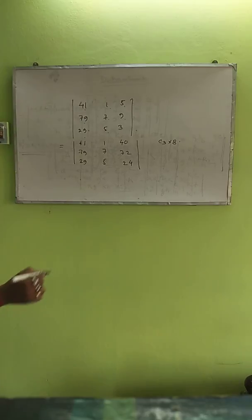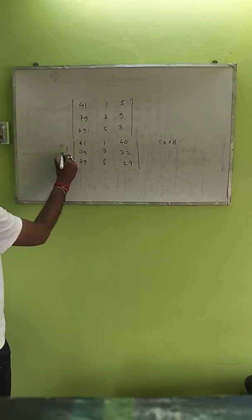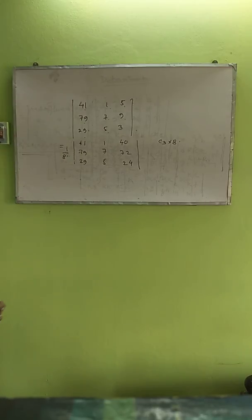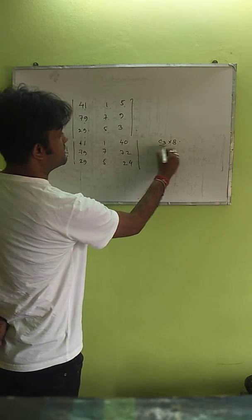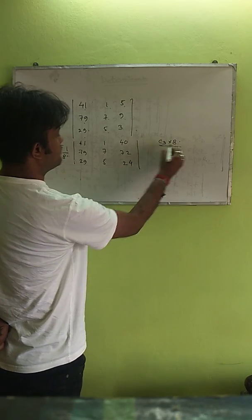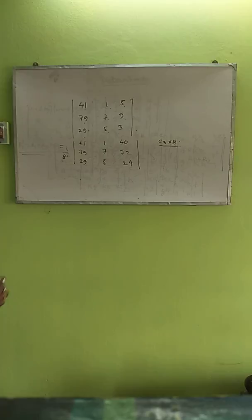We have to adjust by 1/8. If we multiply C3 by 8, we have to adjust by 1/8.